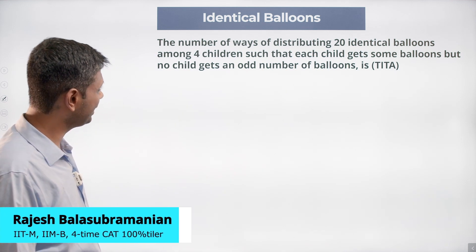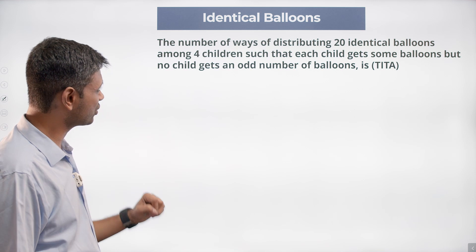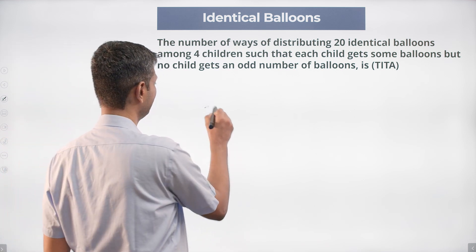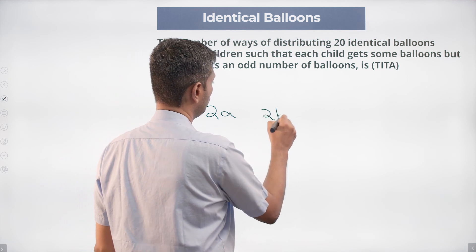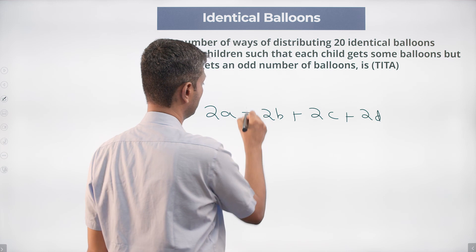The number of ways of distributing 20 identical balloons among four children such that each child gets some balloons but no child gets an odd number of balloons. 2a, 2b, 2c, 2d - all four are even numbers, and all this adds up to 20.